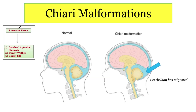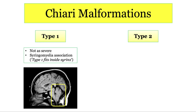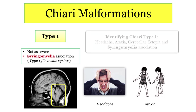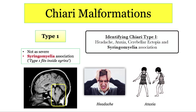The final posterior fossa lesions include the dreaded Chiari malformations type 1 and type 2. The one-liner for both is that parts of the cerebellum are in places where they shouldn't be. For type 1 — the less severe type — this is caused by ectopia of the cerebellar tonsils, meaning they're just in a weird place. The classic patient is a young adult with headaches and maybe some cerebellar symptoms like ataxia or dysmetria. Be on the lookout for a Chiari 1 malformation when given a young adult with headaches and a sagittal MRI. The key association with Chiari 1 is syringomyelia — think of the 1 as fitting inside of the syrinx.